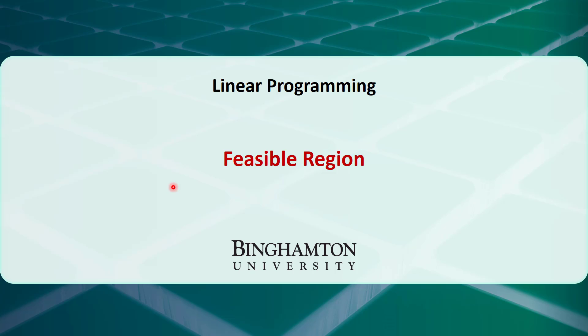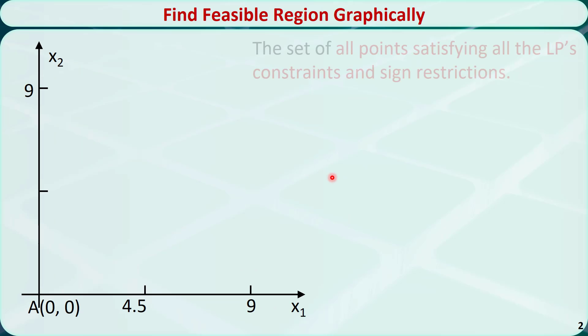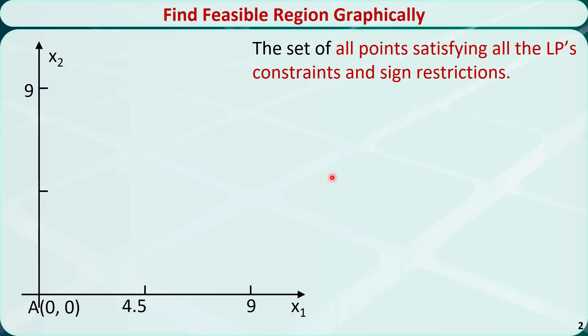In this video, I will talk about how to find feasible regions of linear programming problems. The feasible region of a linear programming problem is a set of all points satisfying all the constraints and sign restrictions.